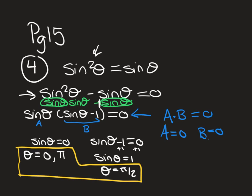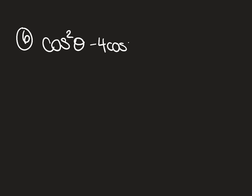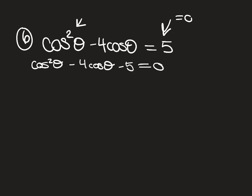Two more problems focused on factoring. Page 15, number 6: cos²θ − 4cosθ = 5. It's a quadratic, so make it equal 0: cos²θ − 4cosθ − 5 = 0. To factor, find two factors of −5 that add to −4: that's −5 and +1.